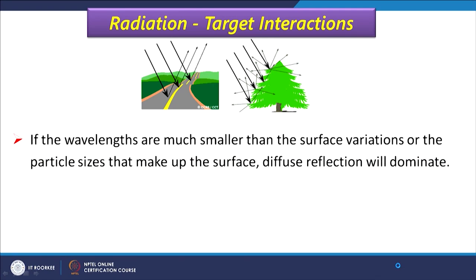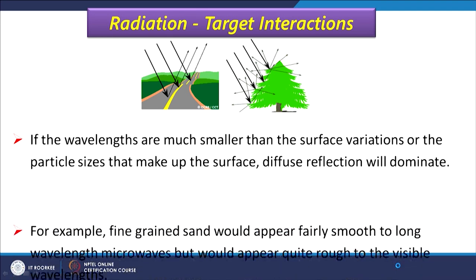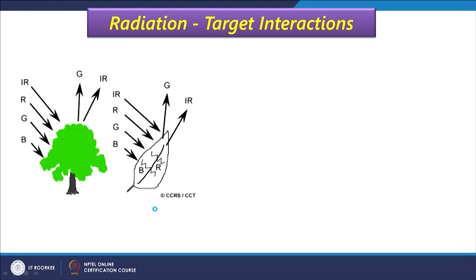Whether a target reflects specularly or diffusely depends on the surface roughness relative to the wavelength of the incoming radiation. If the wavelength is much smaller than the surface variation or particle sizes, diffuse reflection will dominate. For example, fine-grained desert sand may appear fairly smooth at long microwave wavelengths but quite rough in visible wavelengths, because microwave wavelengths are very large and small differences in sand particles are not registered — appearing smooth in microwave but rough in visible channels.